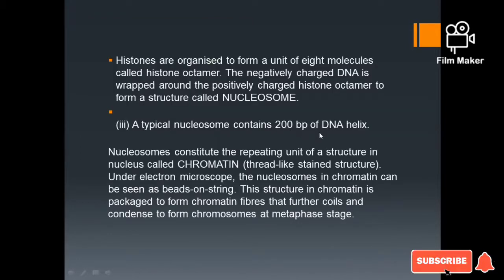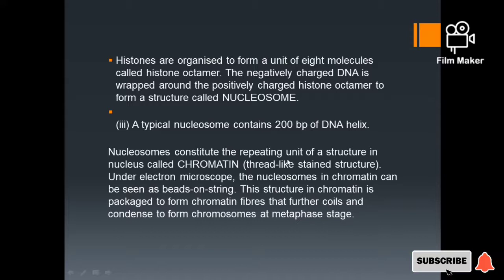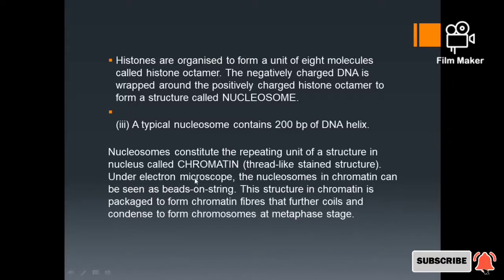Each nucleosome contains 200 base pairs of DNA helix. The nucleosome constitutes the repeating unit of a structure in the nucleus called chromatin. Nucleosomes can be seen as beads on a string. This chromatin structure is further packaged to form chromatin fibers that coil and condense to form chromosomes at the metaphase stage.